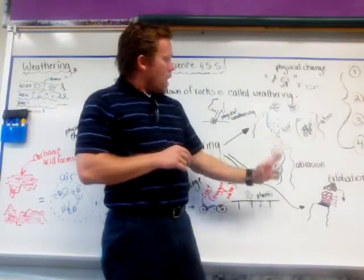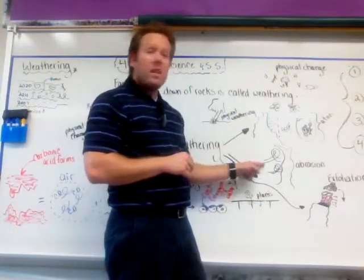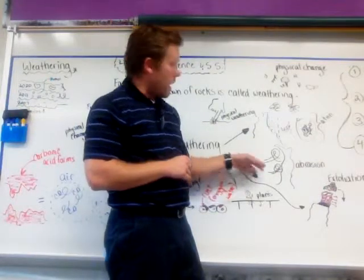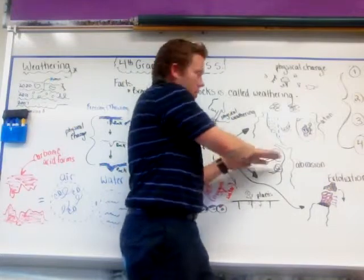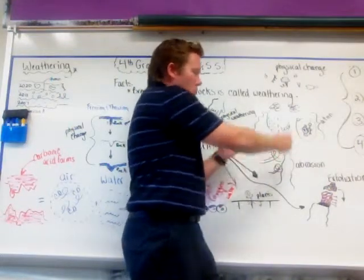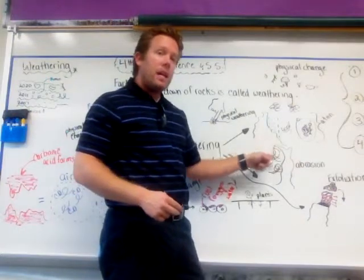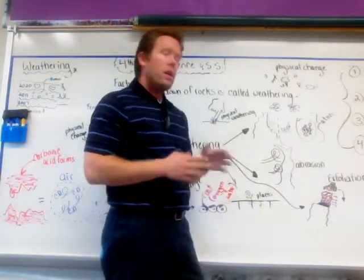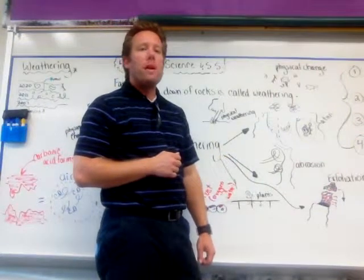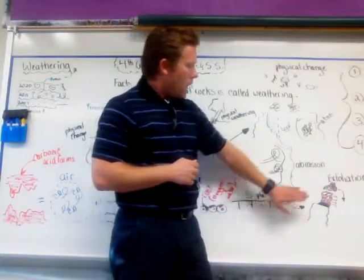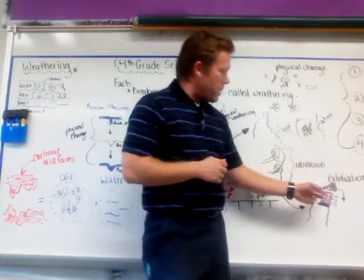The wind is also made of tiny little atoms, and it's constantly pounding into this rock. You can see it has made a little half circle into the rock as well. This is called abrasion. Another type of physical weathering is called exfoliation.